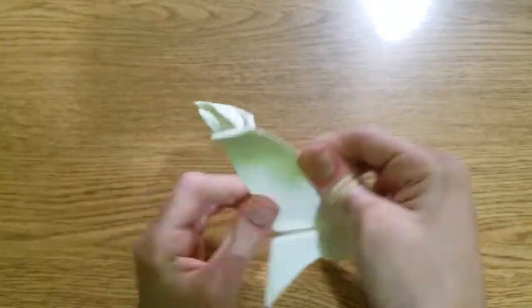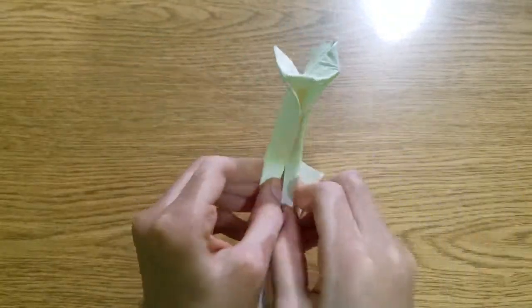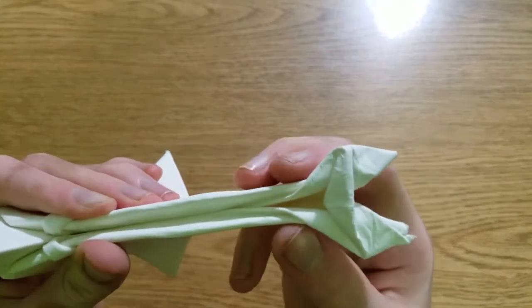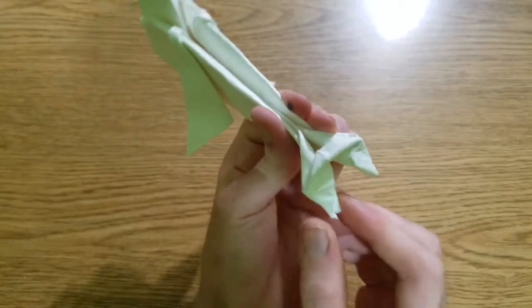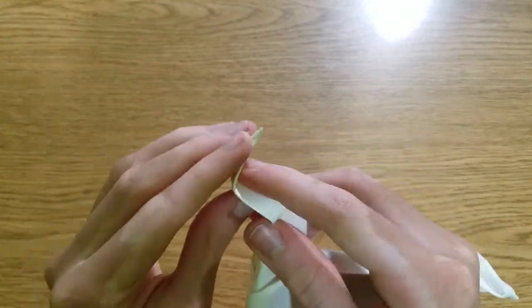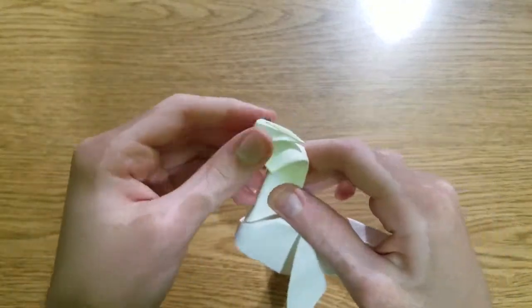And I'll repeat on the other side. And the tail will look like this. Fold this flap over and then make the eyes like this.